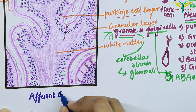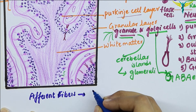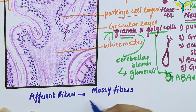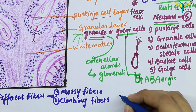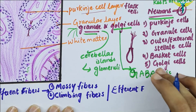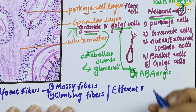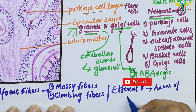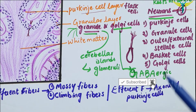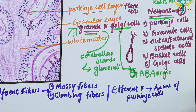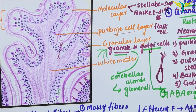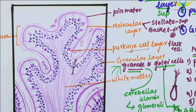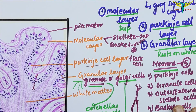Finally, we should remember the afferent fibers of the cerebellar cortex. The afferent fibers are of two types: the first is mossy fibers and the second is climbing fibers. The efferent fibers of the cerebellar cortex are the axons of the Purkinje cells. Fibers from the dentate, emboliform, and fastigial nuclei also leave the cerebellum through the inferior cerebellar peduncle.